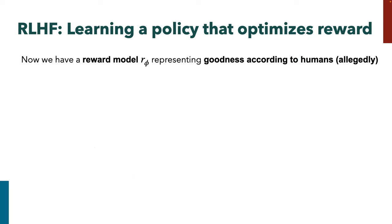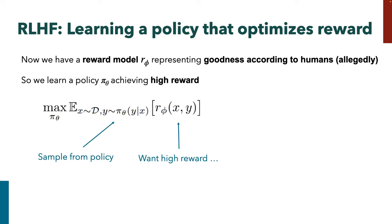Step two: we fit this reward model with preference data over the SFT samples. Now we have an SFT model that kind of does what we want, and a reward model that allegedly assigns high reward to good stuff and low reward to bad stuff. I say 'allegedly' because it's a bit silly — we have a single reward function that takes input and output and gives you one number saying how good it is. If you think about it, people have different opinions on what's good and what's bad.